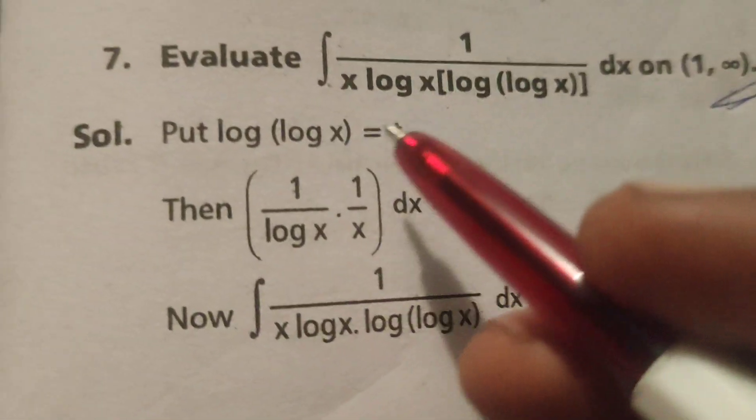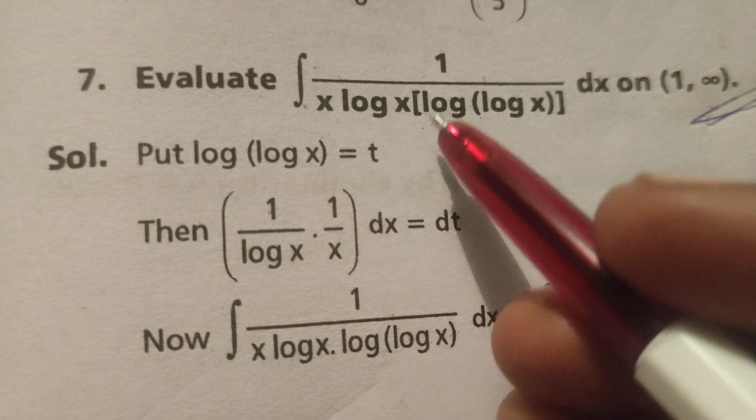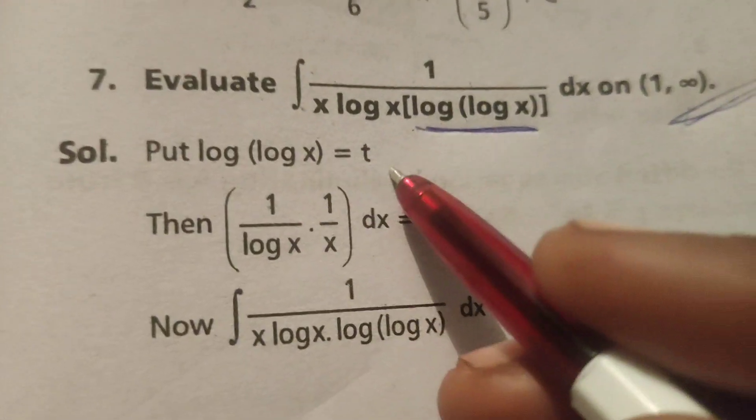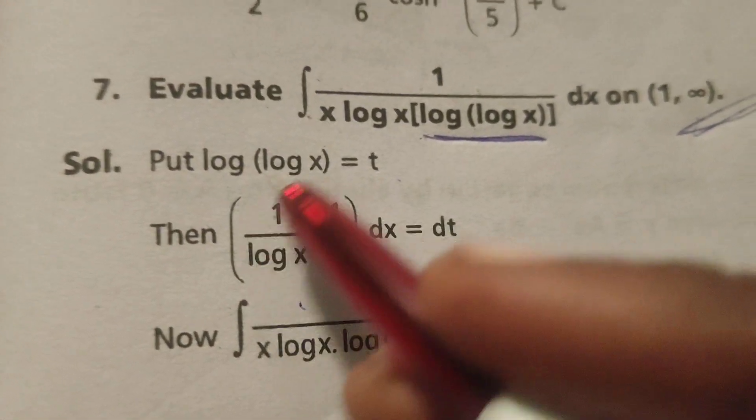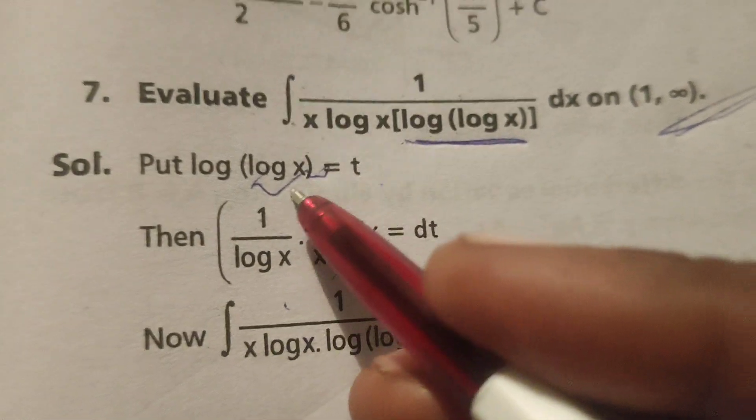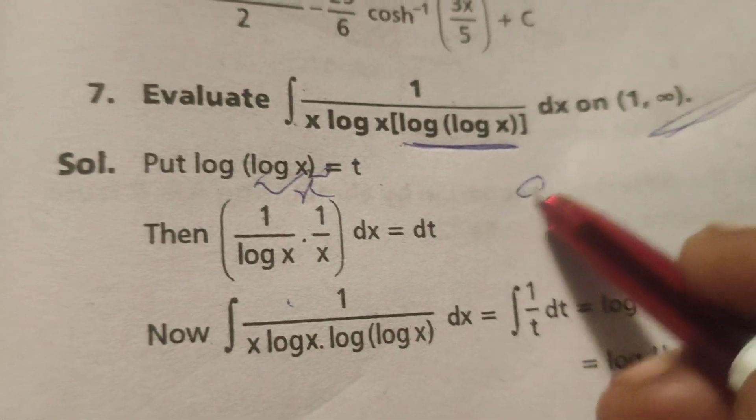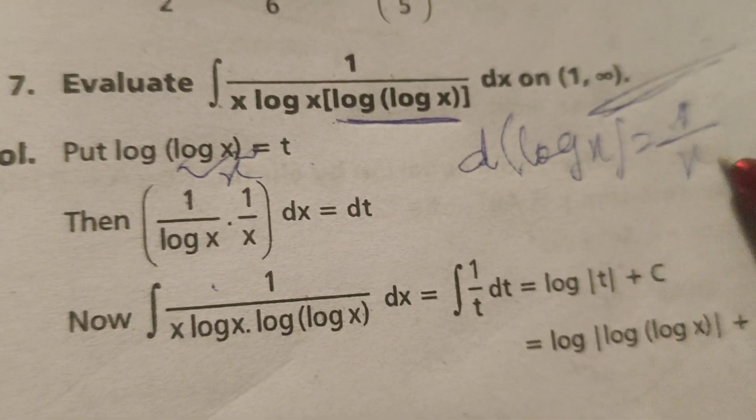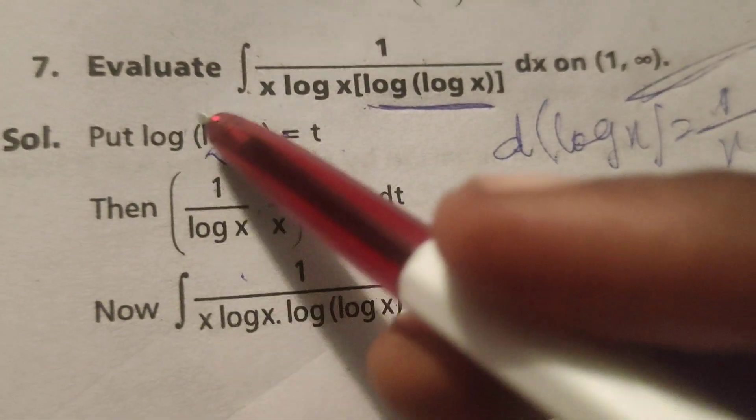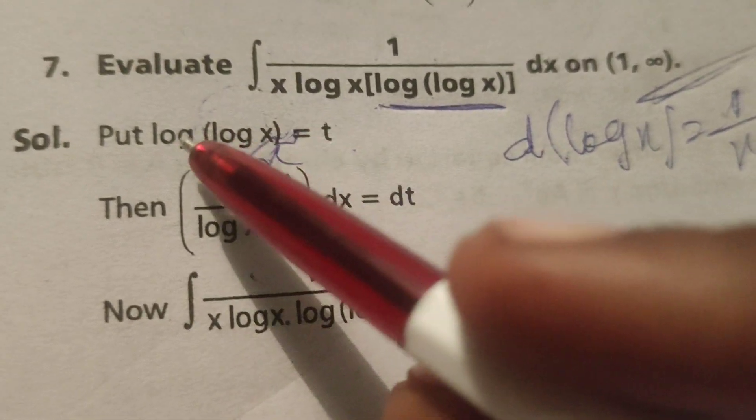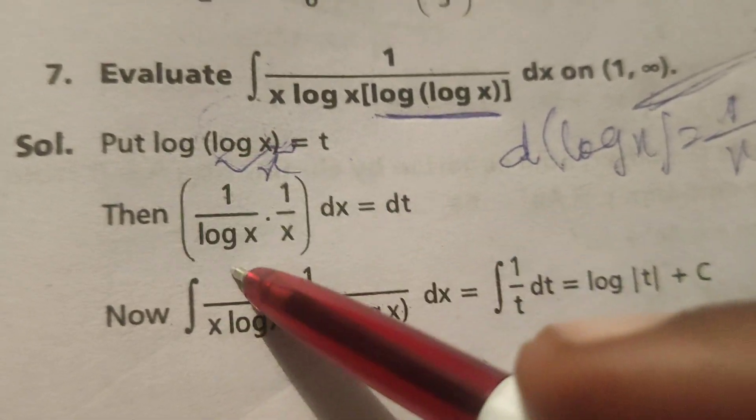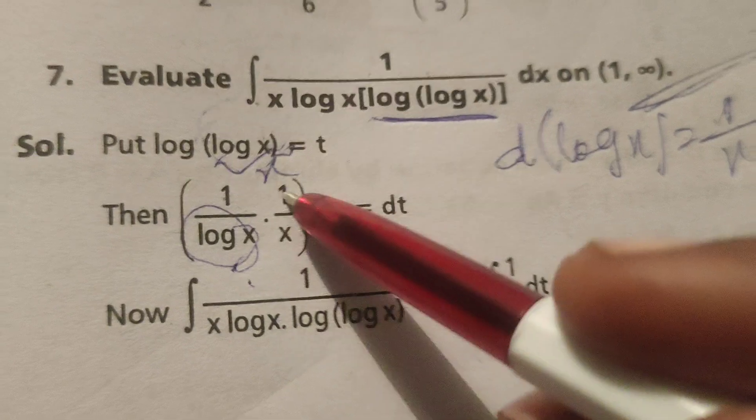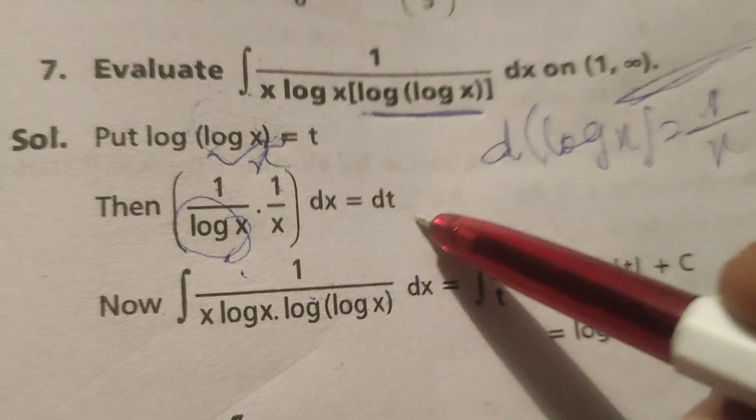Here, put log(log x) equals t. Then differentiate this. The differentiation of log x, we know, is 1 over x. So here, in place of x, log x is there. Therefore, 1 over log x. Again, log x means 1 over x times dx equals dt.